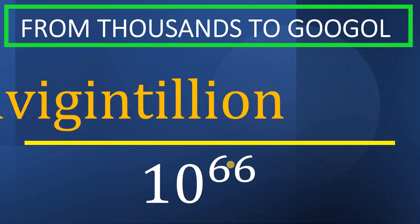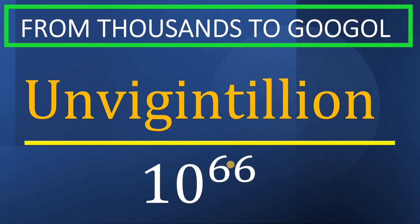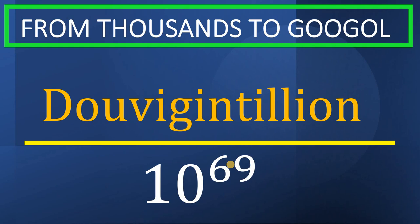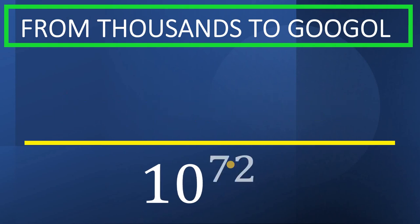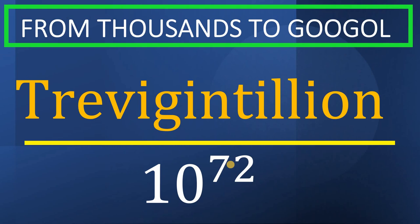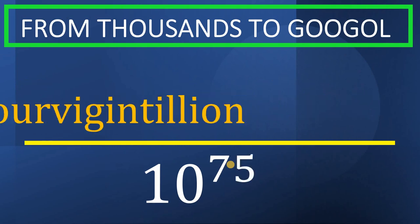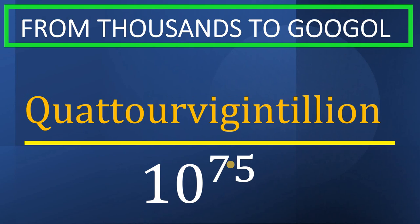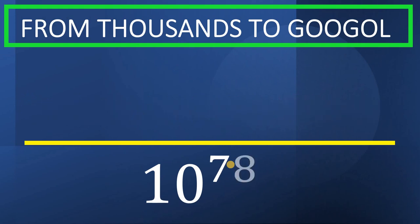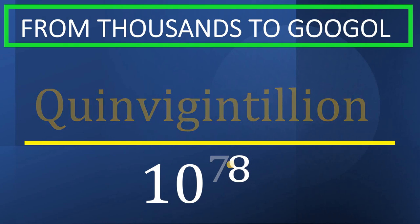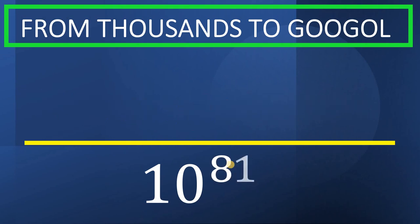10 raised to 66, it is called unvigintillion. 10 raised to 69, it is called duovigintillion. 10 raised to 72, it is called trevigintillion. 10 raised to 75, it is called quattuorvigintillion. 10 raised to 78, it is called quinvigintillion. 10 raised to 81, it is called sexvigintillion.